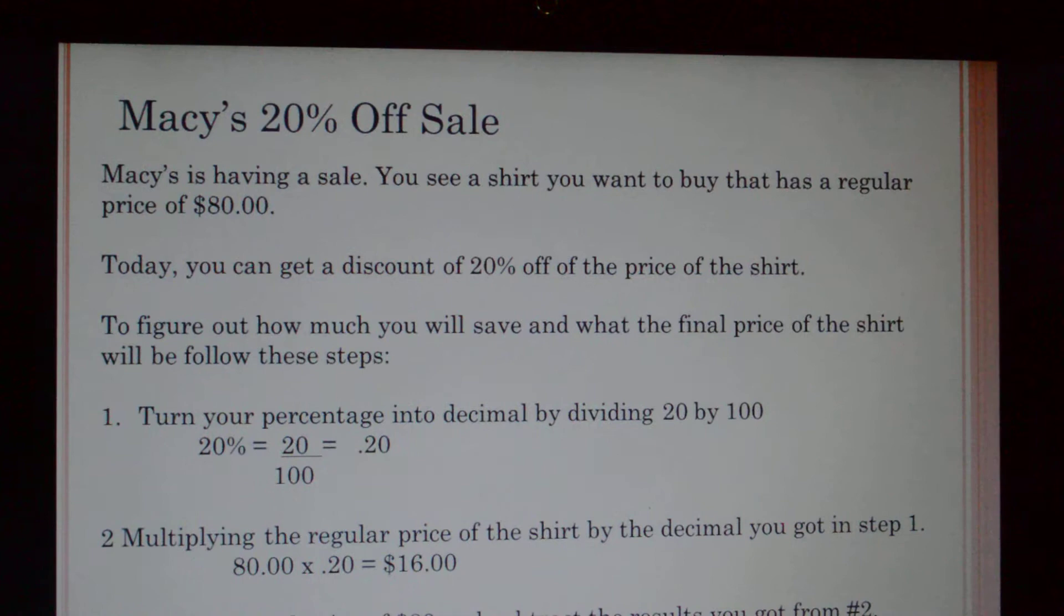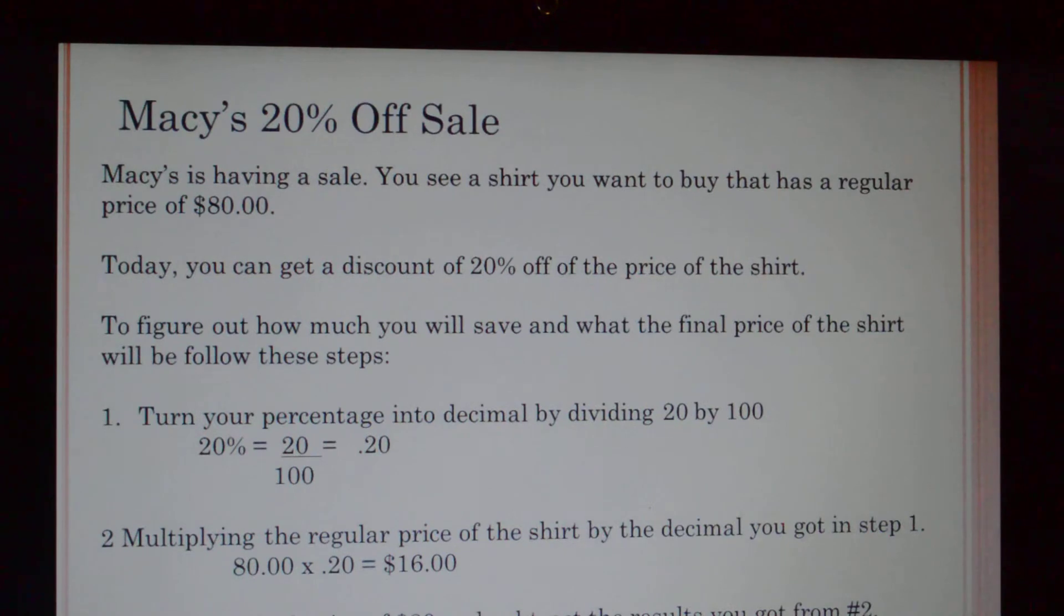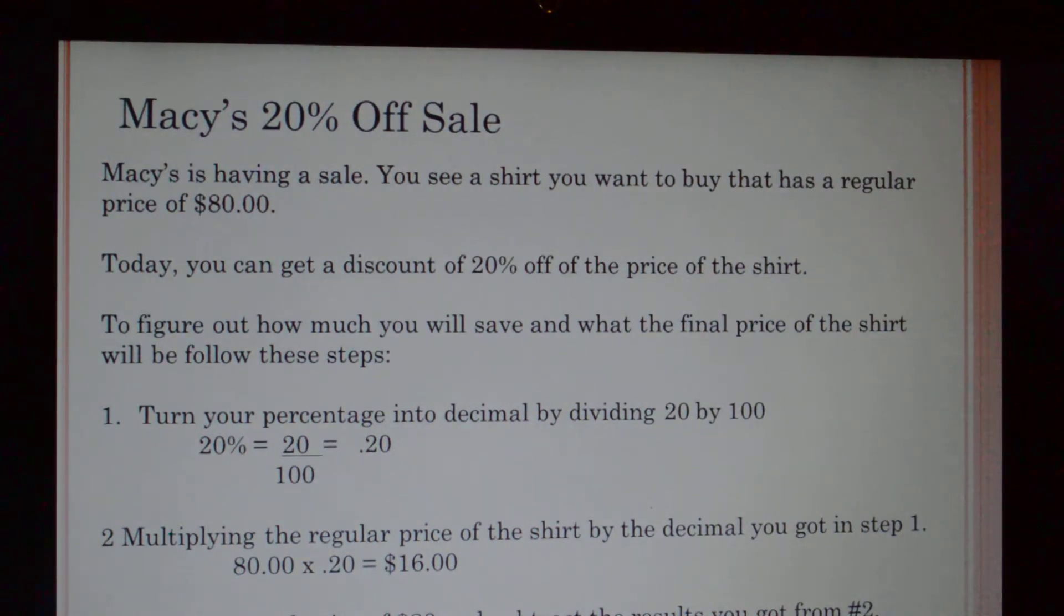Take the original price of the shirt, eighty dollars, and subtract the results you got from number two. So we're going to take eighty minus the sixteen dollars, and that's going to give us sixty-four dollars. The sales price of the shirt is sixty-four dollars. You saved sixteen dollars off the regular price of the shirt.